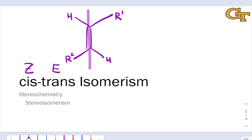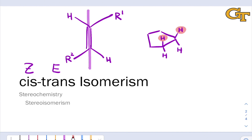A similar idea can be applied to ring systems. Let's imagine looking at a five-membered ring from the side — a cyclopentane ring. Looking at it from the side reveals that the ring sort of has two sides or faces to it. We have a space above the ring that we might call the top face, and a space below the ring that we might call the bottom face. Whether groups are on the same face or opposite faces of the ring is a cis-trans isomerism question.